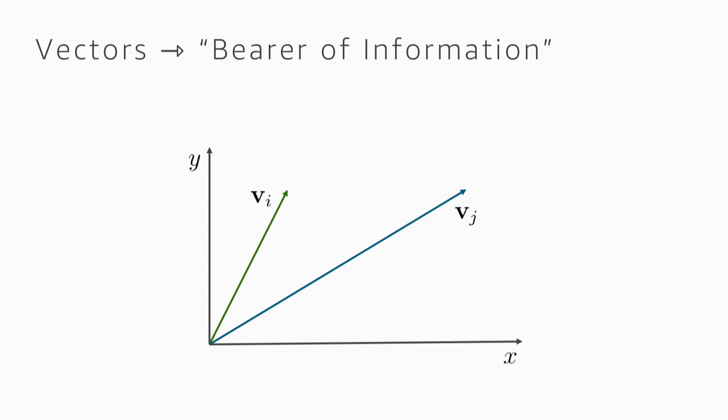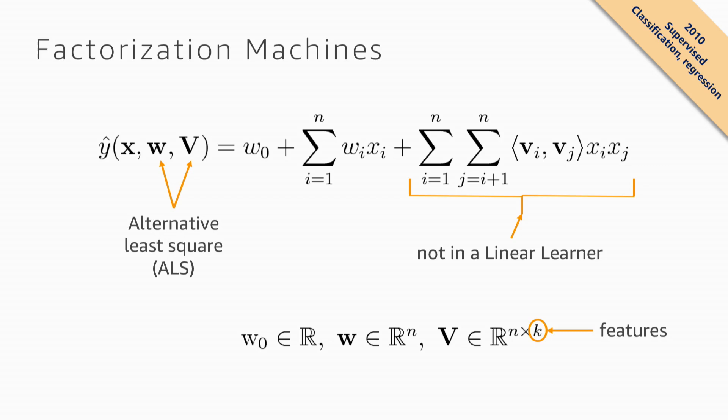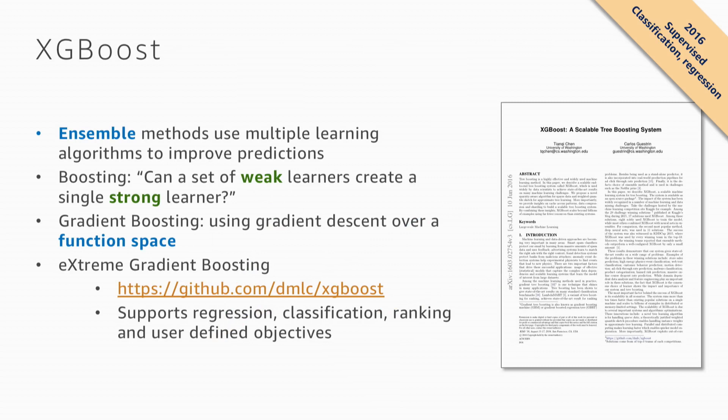Going back to the loss function, the dot product term captures how much you like a movie weighted by how similar it is to another. This helped a lot. Over time, other algorithms emerged and people had another idea: if no single model is always best, why not use multiple models together? This is the concept of ensemble learning, which became very popular in machine learning.